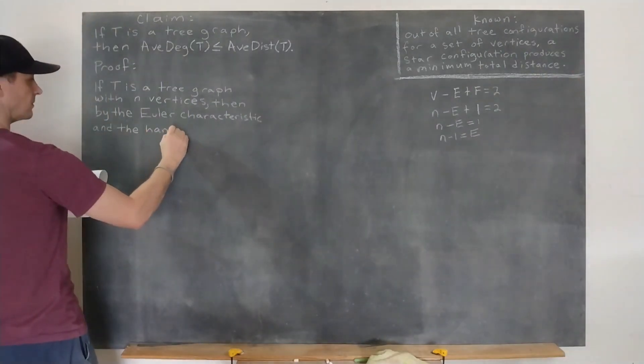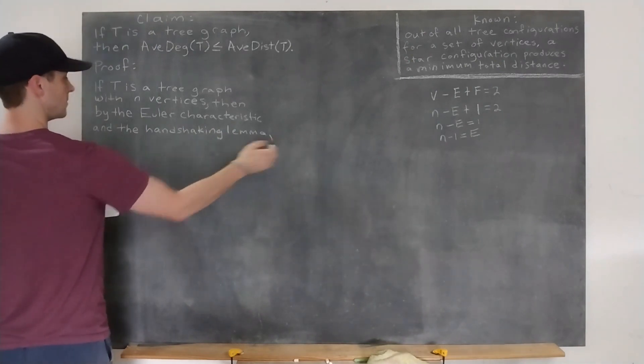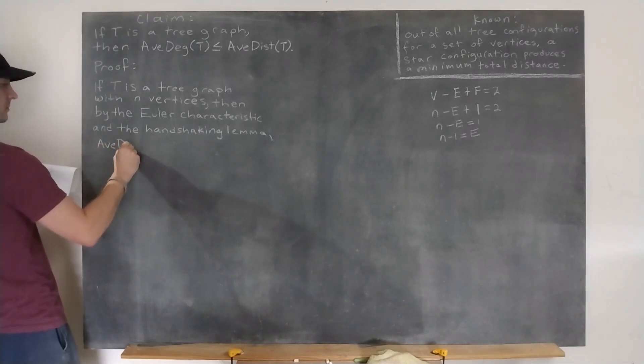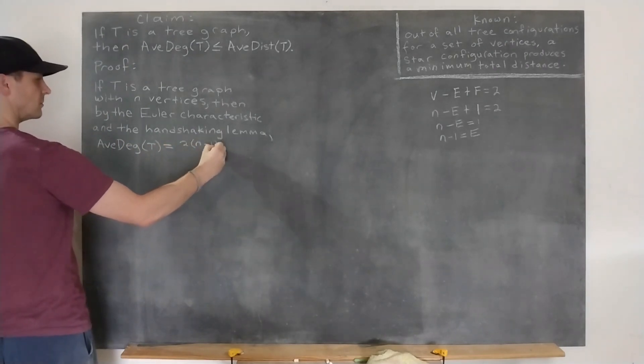The handshaking lemma, briefly mentioned earlier, tells us that the sum of the vertex degrees is twice that of the number of edges. Since there are n of them that we're adding up, the average degree for t must be 2 times quantity n-1 all over n.